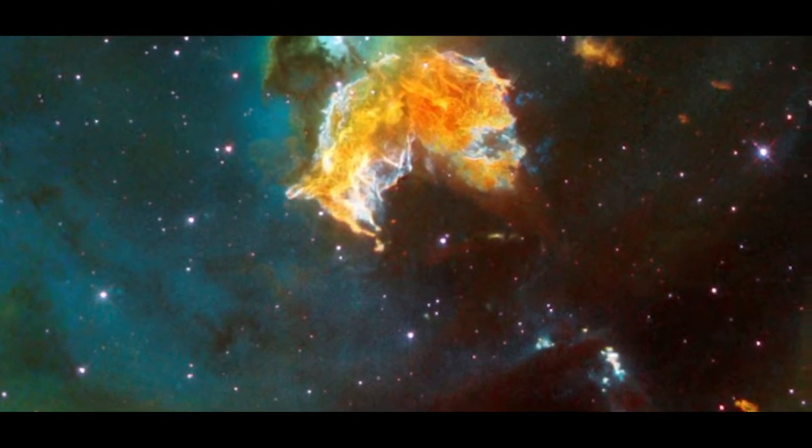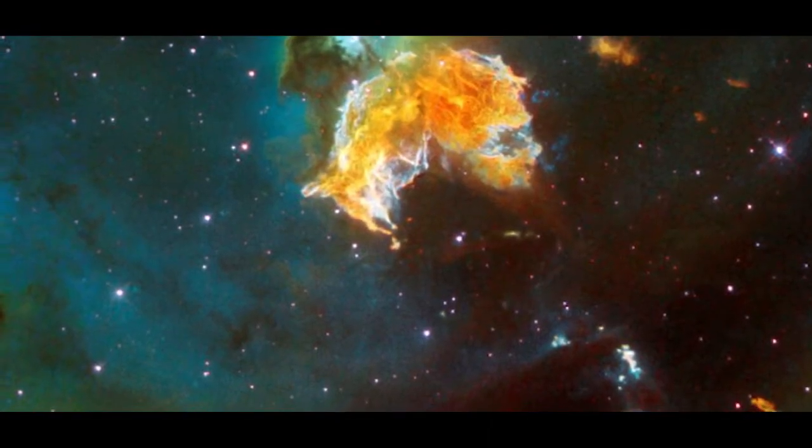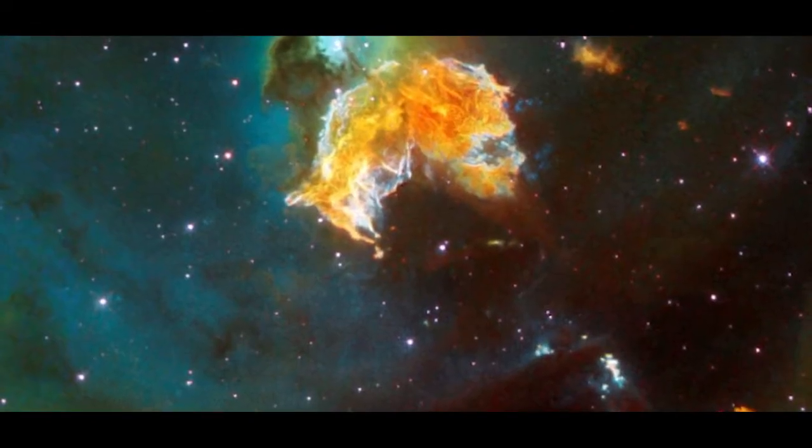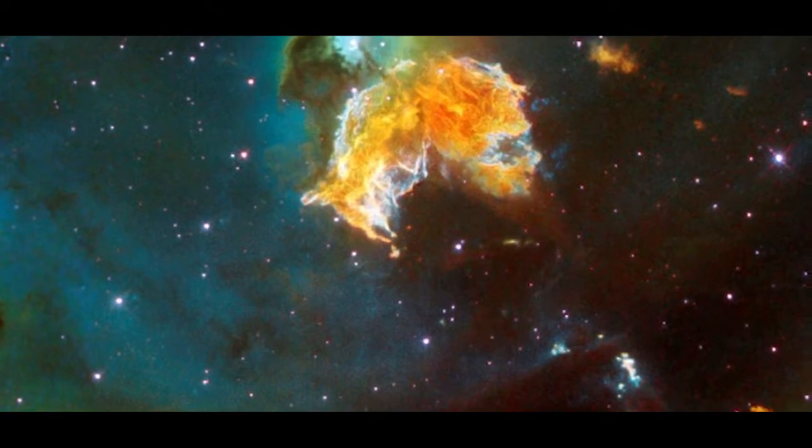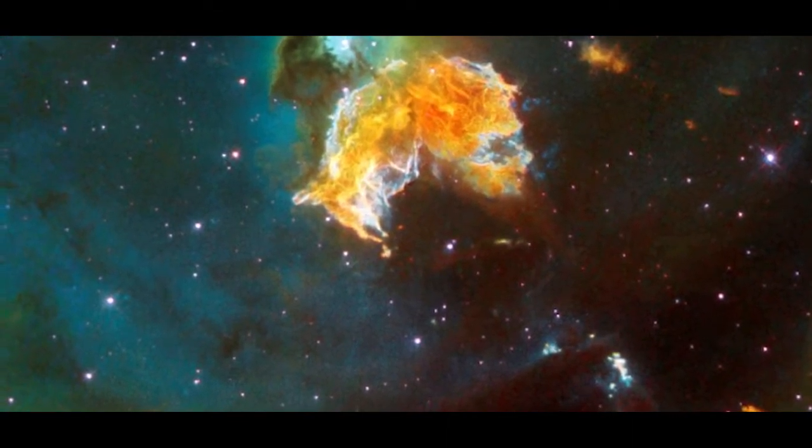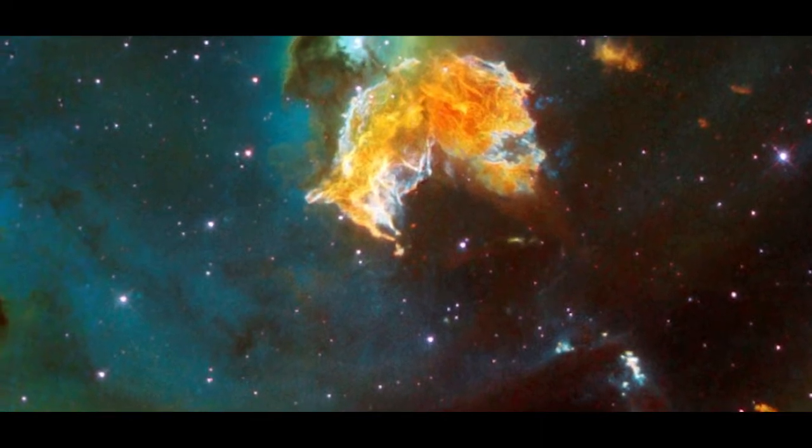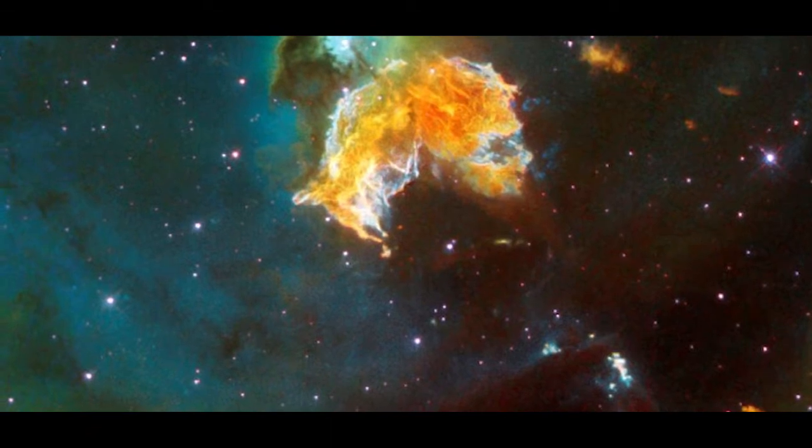The object, officially known as N63A, is the product of a star that collapsed under its own weight in the not-too-distant large Magellanic Cloud, located 163,000 light-years from the Milky Way. The resulting dispersal of superheated gas took on this shape by chance.